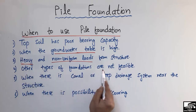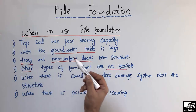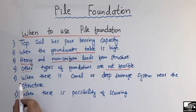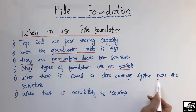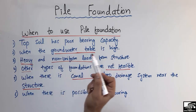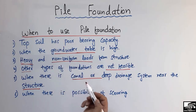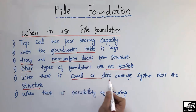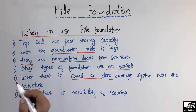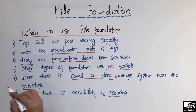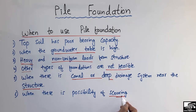Fourth, when other types of foundations are not feasible for any reason, you must switch to pile foundation. Fifth, when there is a canal or deep drainage system near your structure that may affect it later — you provide pile foundation to prevent water from the canal affecting the structure in the future. Sixth, when there is a possibility of scour occurring at the bottom of your structure, you must provide pile foundation to avoid the scour phenomenon.